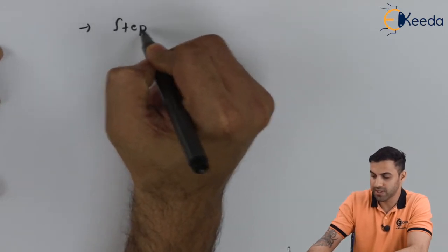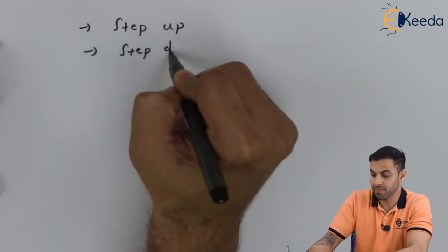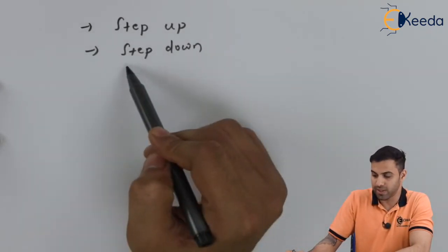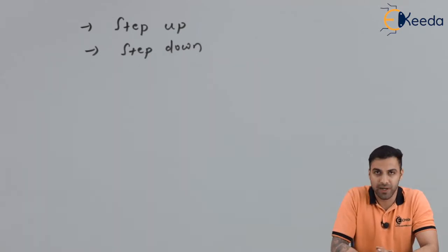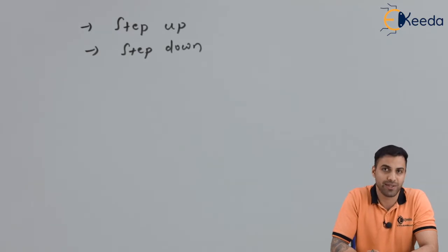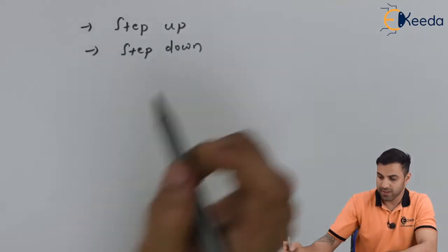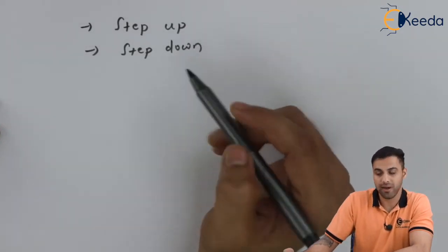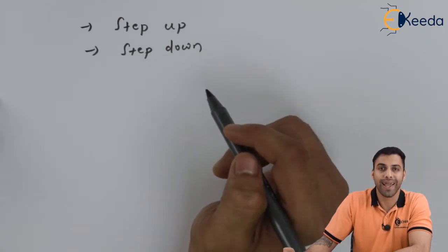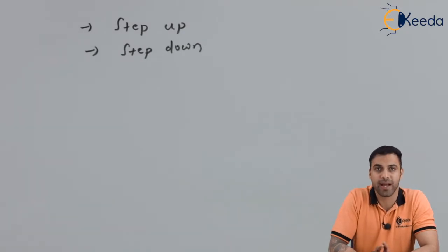There are multiple types of cycloconverters. The first is called a step up cycloconverter and the second is called a step down cycloconverter. Step up cycloconverters convert an AC voltage to a higher frequency AC voltage. Step down cycloconverters convert to a comparatively lower output frequency. So a step up cycloconverter gives an output frequency greater than the input frequency, and a step down cycloconverter provides an output frequency less than the input frequency.